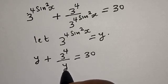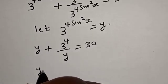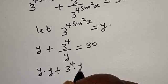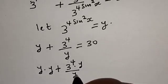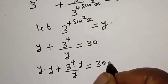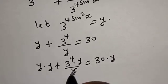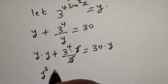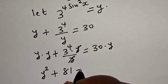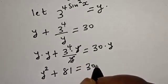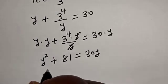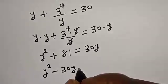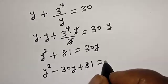Let's multiply all terms by y to eliminate the fraction. We get y × y + 81 × y/y = 30y. This simplifies to y² + 81 = 30y, which rearranges to y² − 30y + 81 = 0.